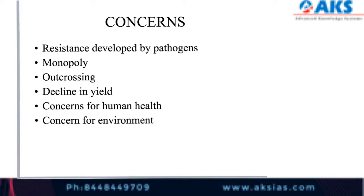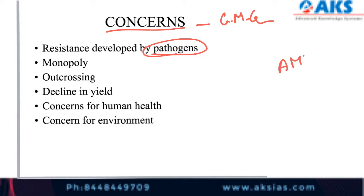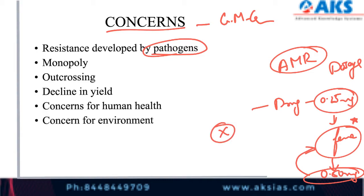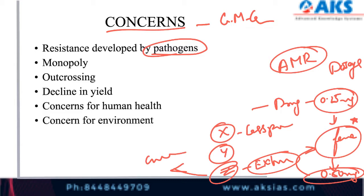Now let us see the flip side — concerns of genetically modified crops. First, resistance developed by pathogens. Similar to antimicrobial resistance, where you need increasing doses of a drug over time, pests can also develop resistance to the toxins in GM crops. A pest that a certain amount of pesticide used to kill may develop resistance, making it even harder to tackle.